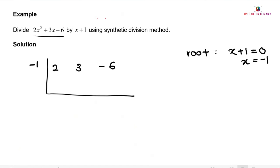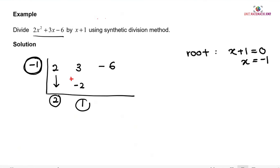Start the process: bring down 2. Then negative 1 multiplied by 2 gives negative 2. Adding: 3 plus negative 2 gives 1. Repeat the process: negative 1 multiplied by 1 gives negative 1. Then adding: negative 6 plus negative 1 is negative 7. So negative 7 is the remainder.